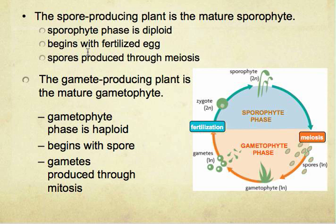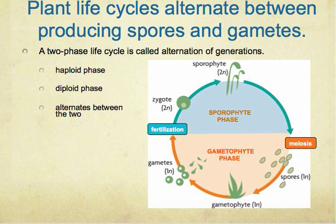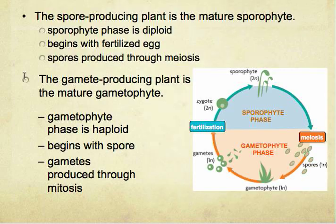The gamete-producing plant is the mature gametophyte. The gametophyte phase is haploid; it begins with a spore, and the gametophyte is produced through mitosis. As you can see, the diagram we saw is the same as over here, because it's applying the same idea.